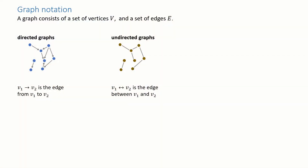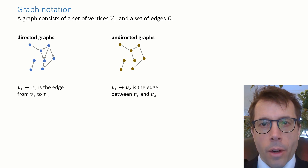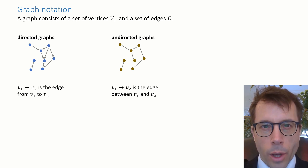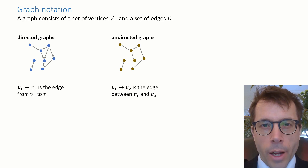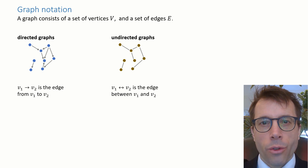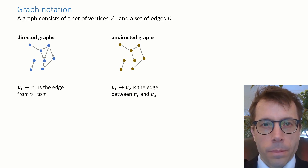That's been a general introduction about what we want graphs for. The next few videos will concentrate on algorithms for finding paths in a graph. But before we get to the algorithms, we should start with some basic notation and definitions. A graph consists of a set of vertices, which we'll call V, and a set of edges, which we'll call E. There are two types of graphs: directed graphs, in which each edge goes from one vertex to another, and undirected graphs, in which each edge links two vertices with no directionality. A lot of the algorithms we'll look at can be applied to either type, but some are specific to one or the other.